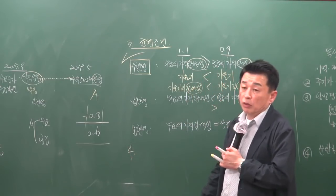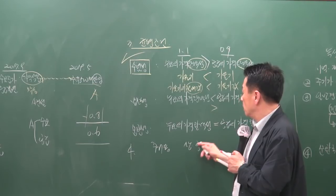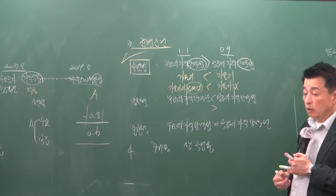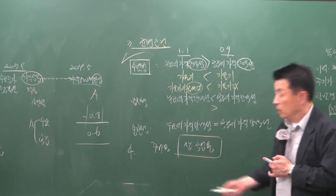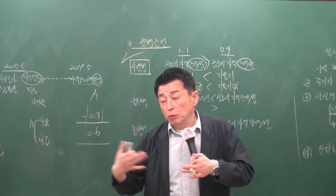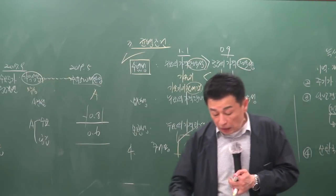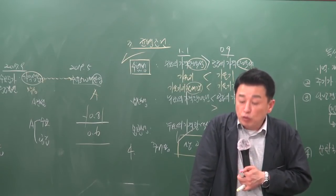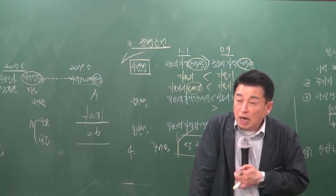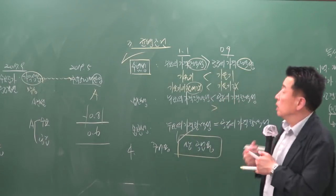거미집 모형은 주거용 부동산보다는 상업용·공업용 부동산에 더 강하게 적용돼요. 주거용은 필수재라 경기가 좋든 안 좋든 기본적인 수요가 존재하지만, 상업용·공업용 부동산은 경기 변동에 영향을 많이 받기 때문이에요.